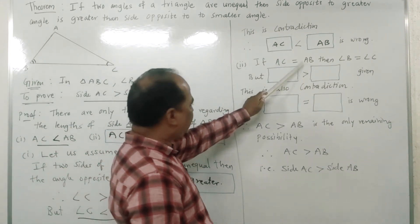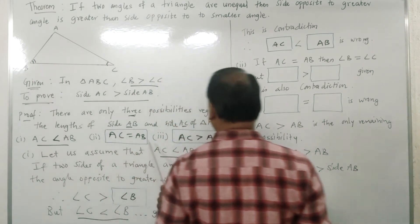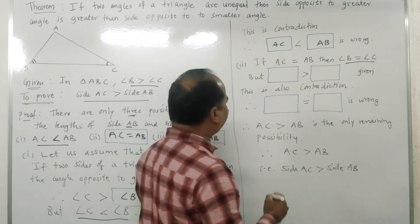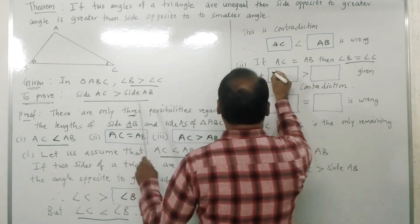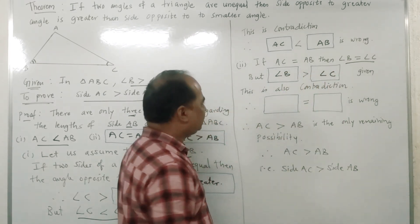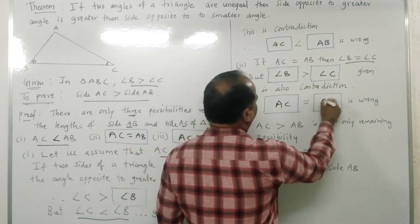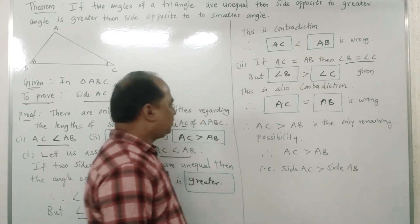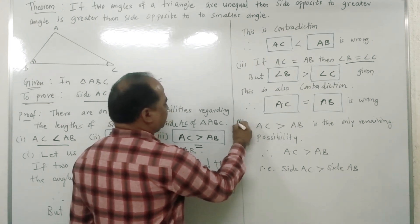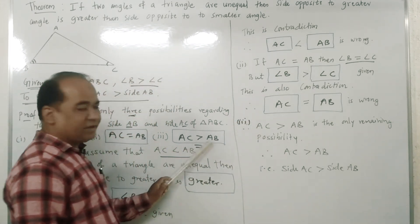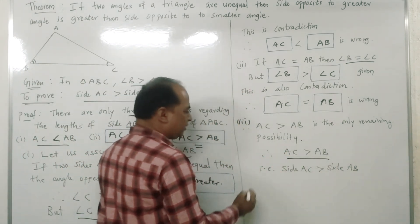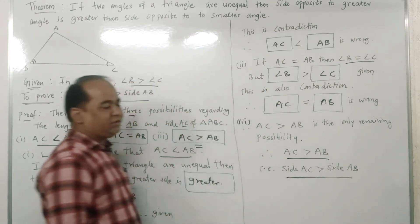Now, if AC is equal to AB, by the isosceles triangle theorem angle B would equal angle C, which contradicts the given condition that angle B is greater than angle C. Therefore, AC is equal to AB is also wrong. So the only remaining possibility, the third possibility, is that side AC is greater than side AB. Therefore, AC is greater than AB. Hence, side AC is greater than side AB is proved.